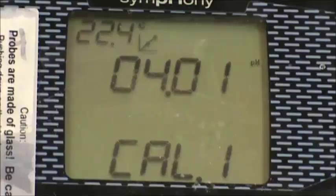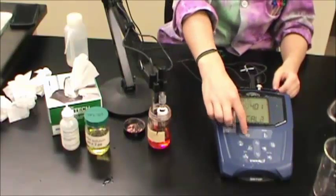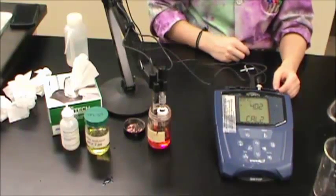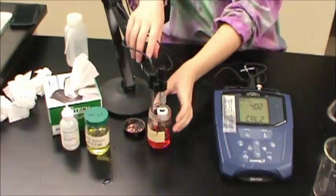The pH reading has stabilized when the pH icon on the right side of the screen has stopped flashing. The correct value for the buffer solution you are using should be shown. Press CAL again to save the value for your first calibration and to add a second.